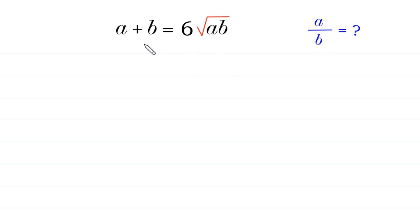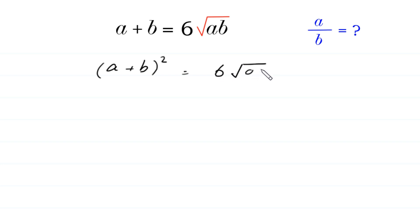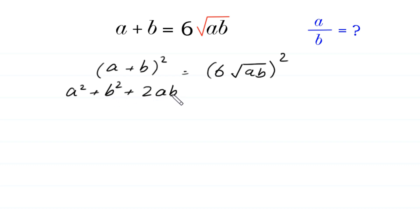Let us start by taking the square of both sides. A plus B whole squared is equal to 6 times square root of AB, whole squared. Expanding: A squared plus B squared plus 2AB equals 36 times AB, since the square cancels the square root.